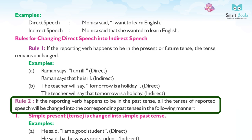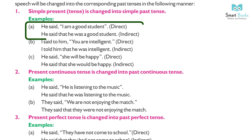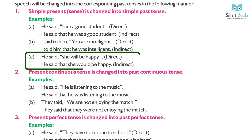Rule 2: If the reporting verb is in the past tense, all tenses of reported speech are changed to the corresponding past tense. (1) Simple Present changes to Simple Past. Examples: (a) He said, 'I am a good student.' → He said that he was a good student. (b) I said to him, 'You are intelligent.' → I told him that he was intelligent. (c) He said, 'She will be happy.' → He said that she would be happy.